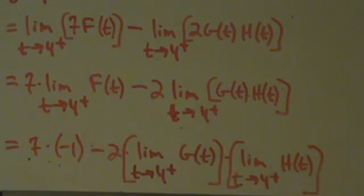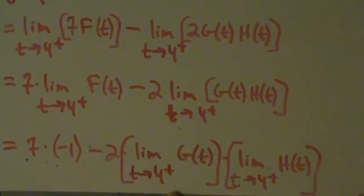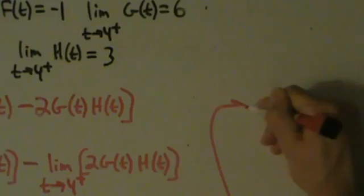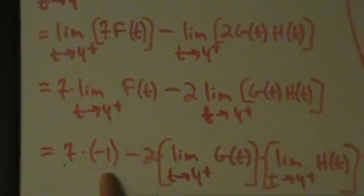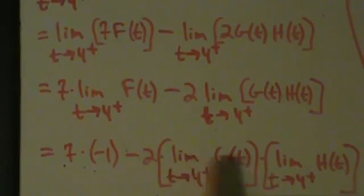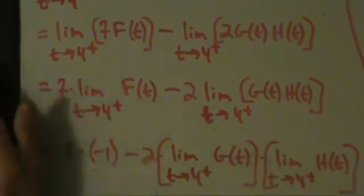They just established the fact that these two limits are separate from each other now. Okay, so now this is pretty much broken apart as much as it can be. So let's go ahead and come back up here. Alright, and then this is going to equal 7 times negative 1 minus 2 times this limit times that limit. So we're told that this limit is 6. And we were told that this limit here is 3. So what we have is 7 times negative 1 minus 2 times 6 times 3.